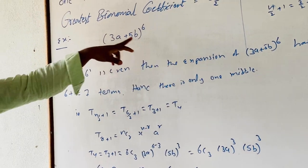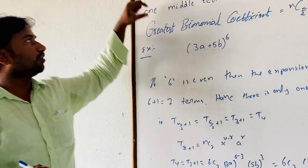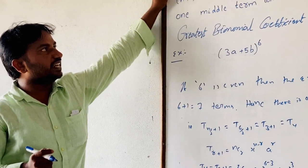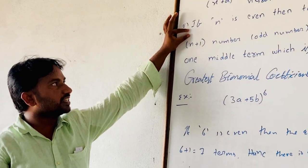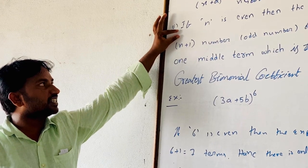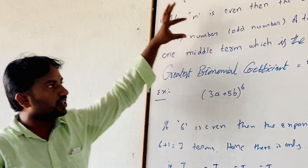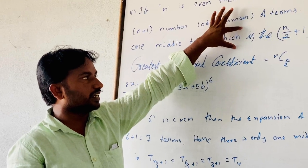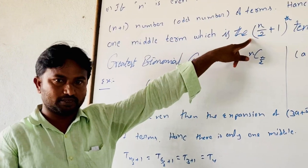Now here, when n is even — meaning the index in the binomial expansion is even — how many middle terms are there? There is only one middle term, and that middle term is the T(n/2 + 1) term.